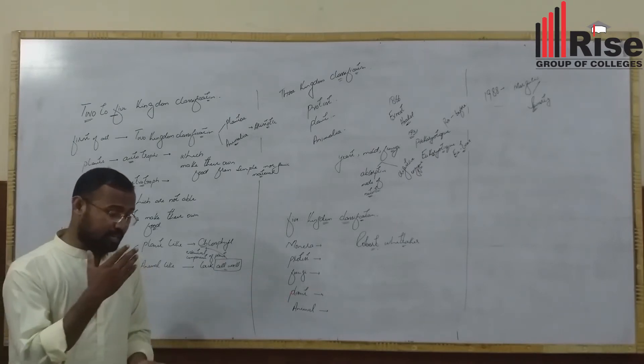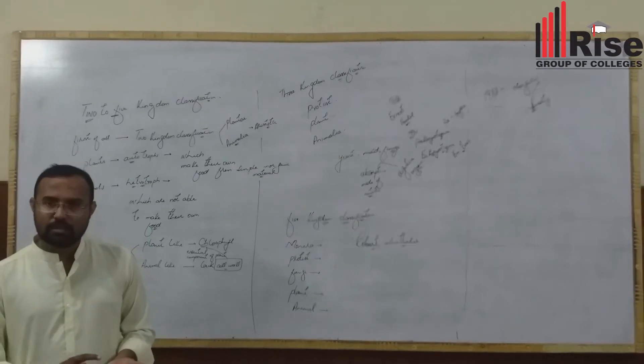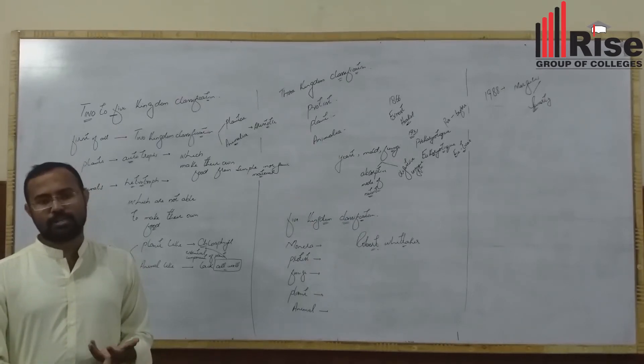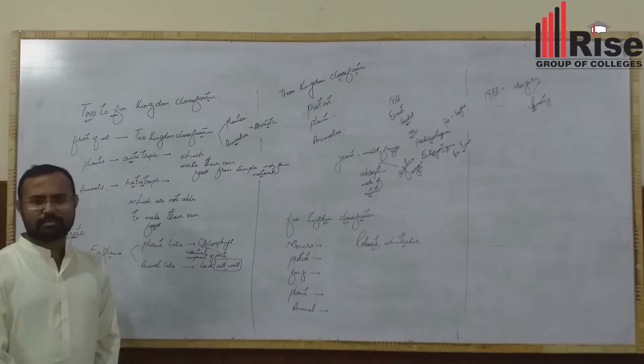In our ecosystem we have decomposers. Producers, consumers, and decomposers. Producers are plants. Animals are consumers. Consumers can be primary, secondary, and tertiary.